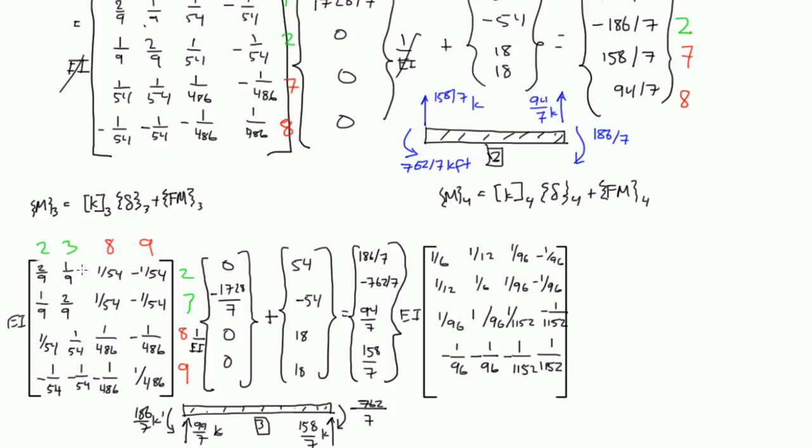And for element 4, sorry, this is getting a little messy, so I'm going to kind of divide this, right? So now we're doing member 4, and member 4 corresponds to a degree of freedom 3, 5, 9, and 10. And 3 was our unrestrained.